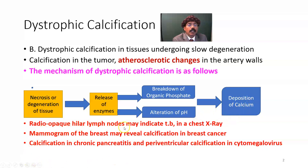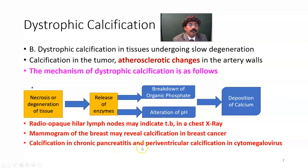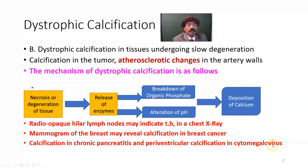Radiopaque hilar lymph nodes may indicate TB on chest X-ray. Mammogram of the breast may reveal calcification in breast cancer. Calcification is seen in chronic pancreatitis. Periventricular calcification along the lateral ventricle or third ventricle of the brain may be related to cytomegalovirus infection.